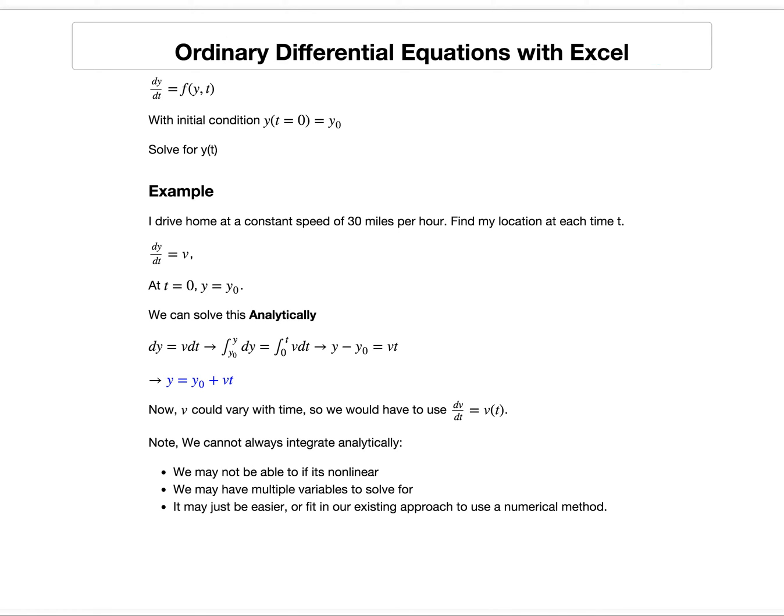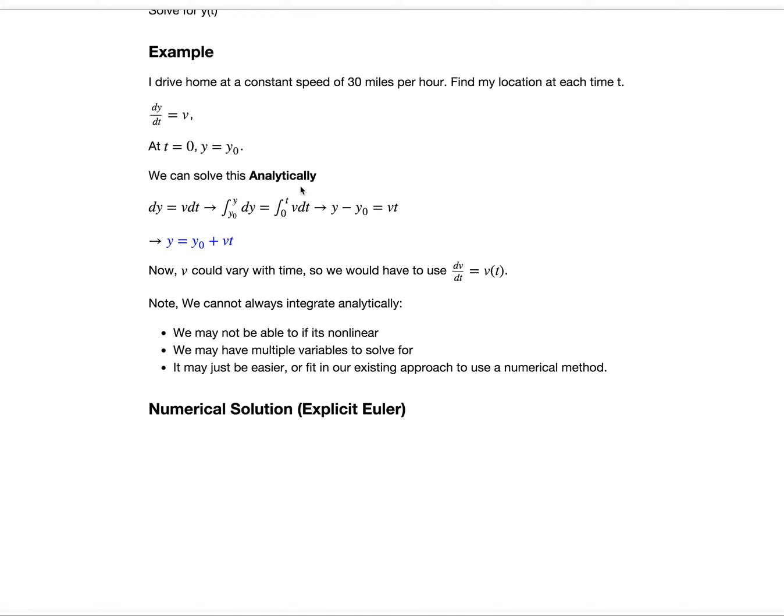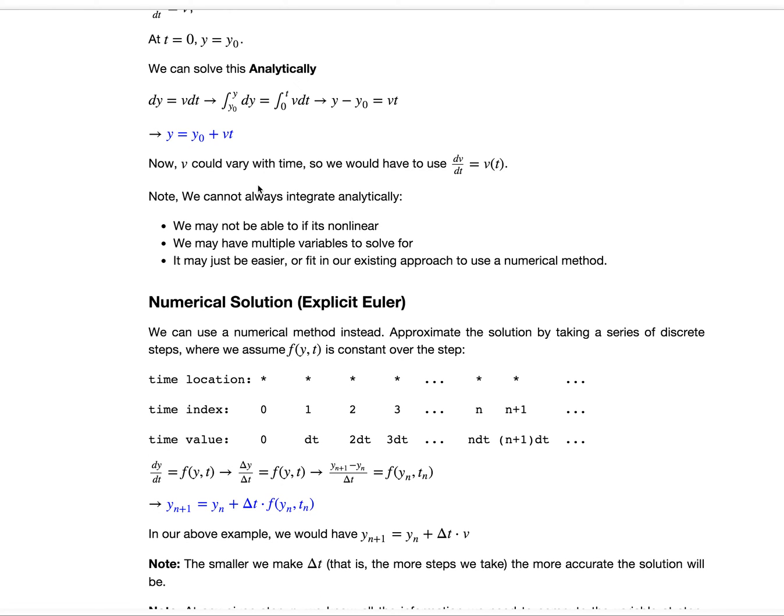We're going to focus here on solving using a numerical method. The method that we'll use is called the explicit Euler method, abbreviated EE. We can use a numerical method by taking a series of discrete steps in time, where we assume that f of y comma t is constant over the step.